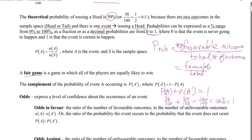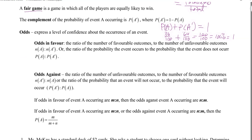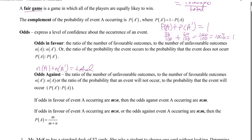Odds. You've probably heard a lot about odds, but not necessarily knowing what they mean. Odds express a level of confidence about the occurrence of an event. We have the odds in favor — the odds that something does happen — and it's the ratio of the number of favorable outcomes to the number of unfavorable outcomes. N(A) is the number of favorable and N(A') is the number of unfavorable, and N(A) plus N(A') equals the total number of possible outcomes.